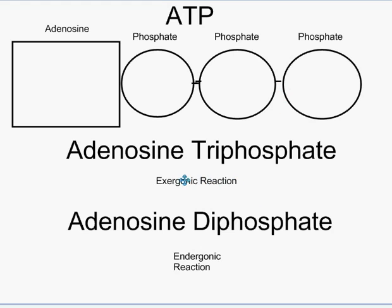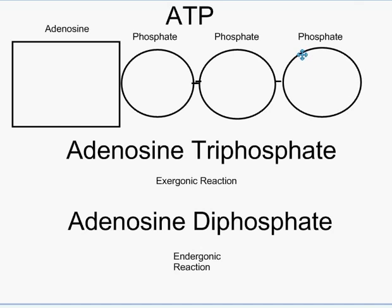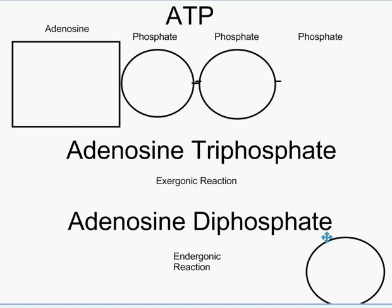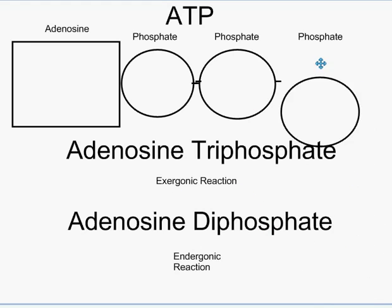This reaction is called an exergonic reaction. It's called an exergonic reaction because energy is actually exiting or leaving the product itself. So we can take ATP as the reactant, break off a phosphate group, and end up with ADP plus energy — and because it's plus energy, it's called an exergonic reaction.